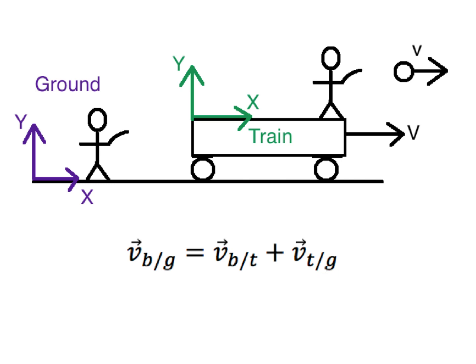In other words, if the guy on the train fires a radar gun and measures the ball at 10 miles an hour, that's the velocity of the ball measured from the moving green train coordinate system. Now if the guy on the ground has a radar gun, he would measure that 10 miles an hour plus the additional velocity of the train. If the train is also moving at 10 miles an hour, obviously he's going to measure 20 miles an hour.